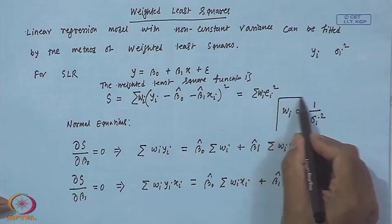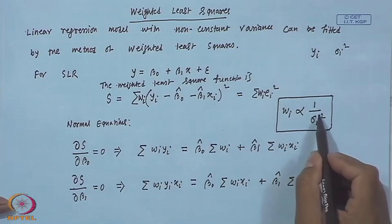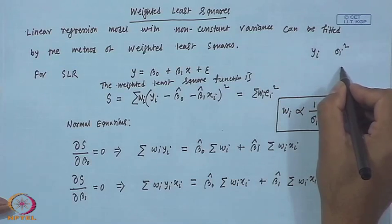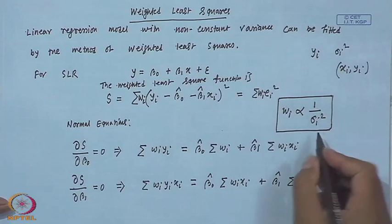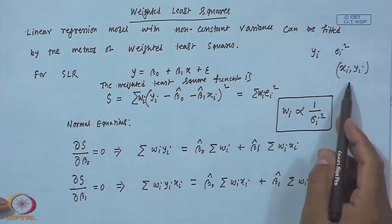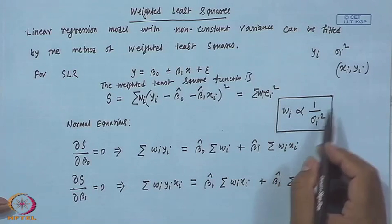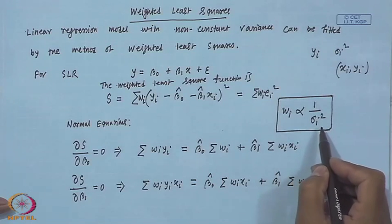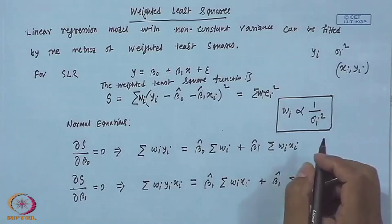I have not yet explained why the weight is proportional to 1/σᵢ² and how to obtain σᵢ². You are given just a dataset x_i and y_i, and you do not know what σᵢ² is for your given set of data. I will come back to this point — first, why this weight is proportional to 1/σᵢ² and how to get σᵢ². I just gave an idea of what weighted least square is — it is very similar to ordinary least square, but we give weight w_i to the i-th observation, proportional to 1/σᵢ².